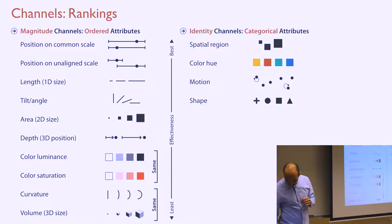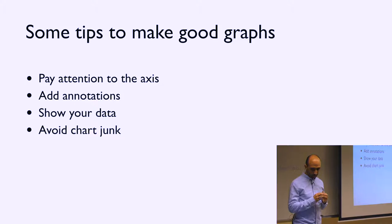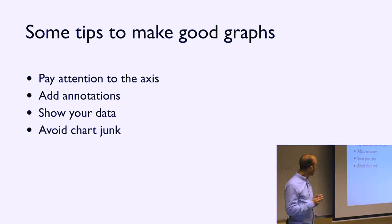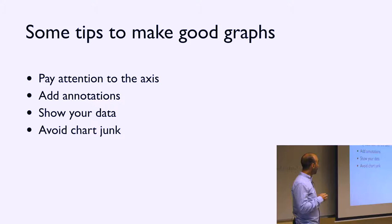So some tips to make good graphs, which are also common mistakes in information visualization, which are: pay attention to the axis, like in the example I showed you before, the y-axis, but it also happens with the x-axis, as we will see. Another good practice is add annotations, then show your data and avoid chart junk. Let's see them individually.